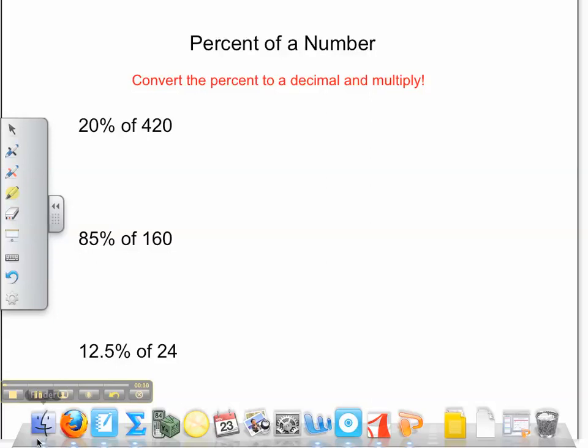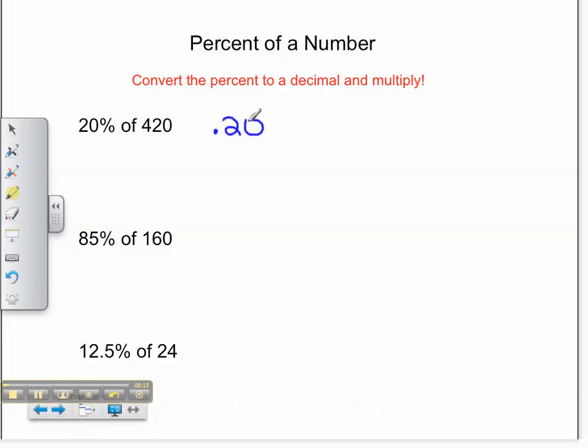Our first problem is 20% of 420. We know 20% is written as 0.20. It could also be written as just 2 tenths. Of tells us to multiply by 420. 2 tenths times 420 equals 84. Therefore, 20% of 420 equals 84.